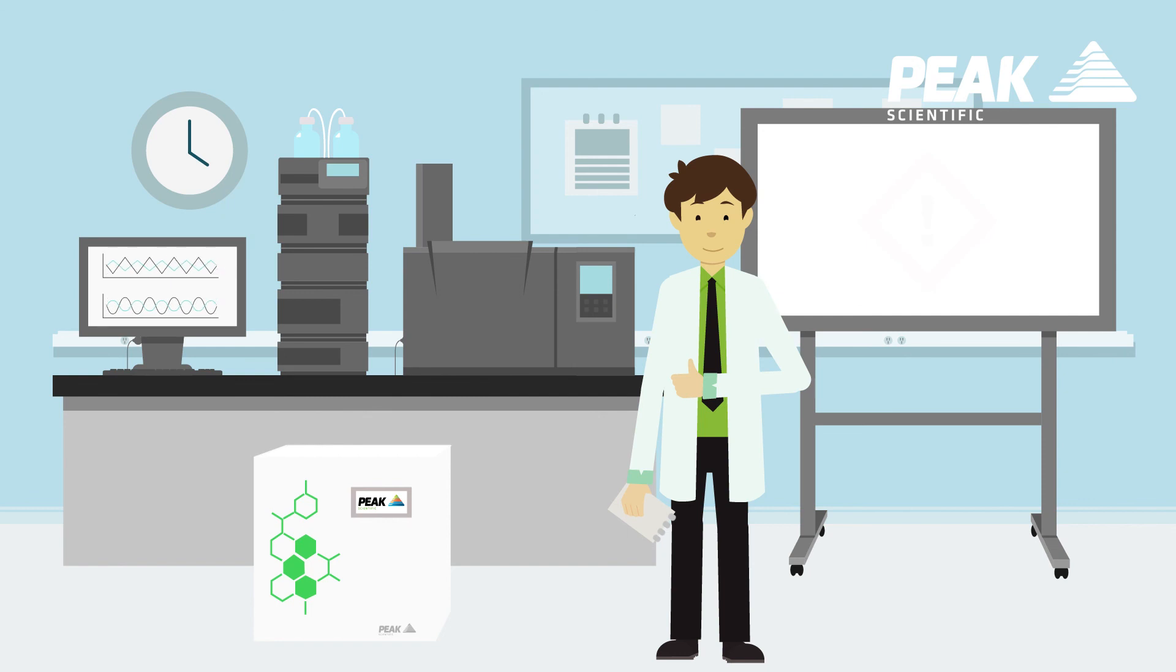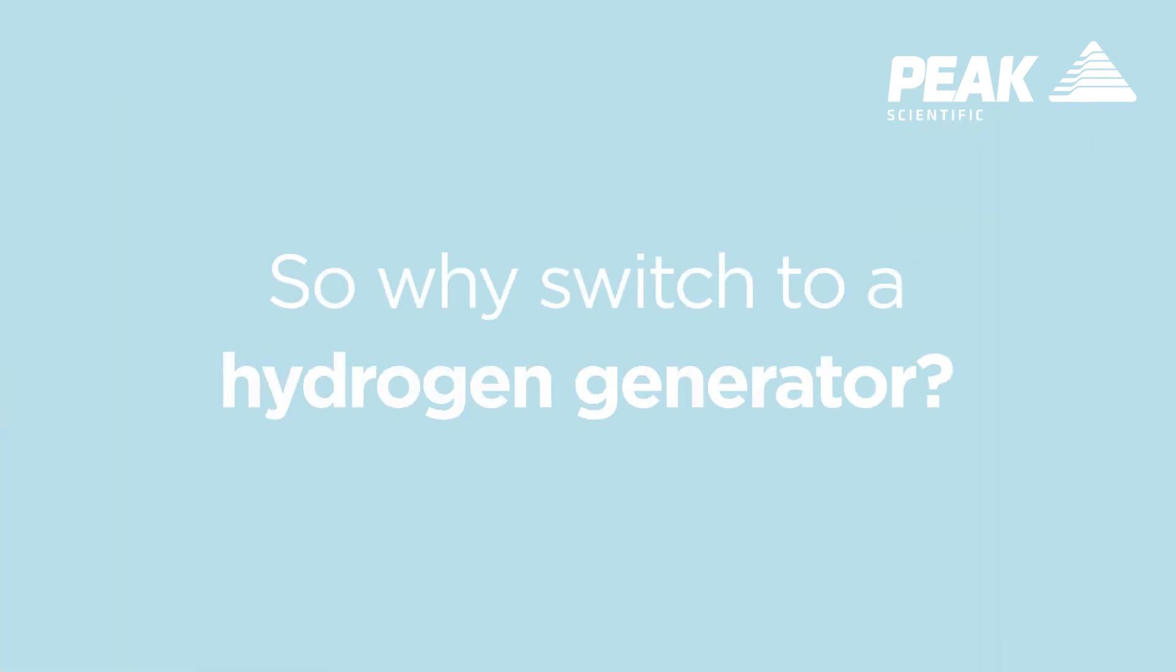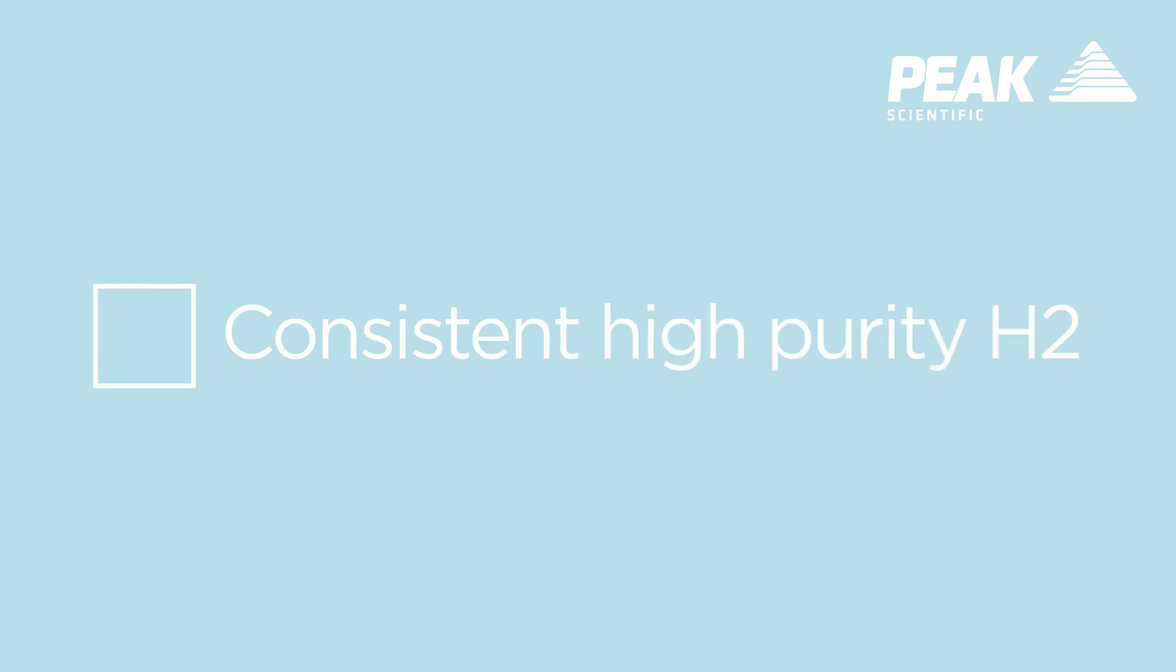So why switch to a hydrogen generator? Use a high-quality hydrogen generator and you'll have consistent high-purity hydrogen. It's a safer option for your lab, thanks to built-in technology with automated safety shutdown. It also means faster sample analysis when using hydrogen. You'll be assured your gas supply will be available 24/7.